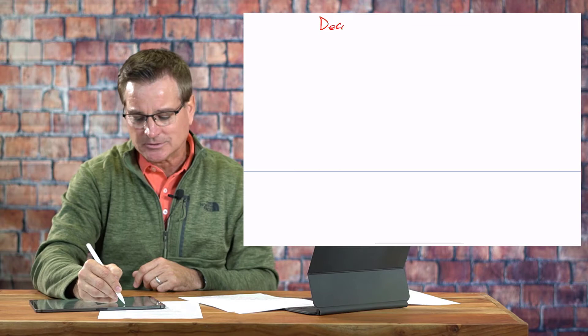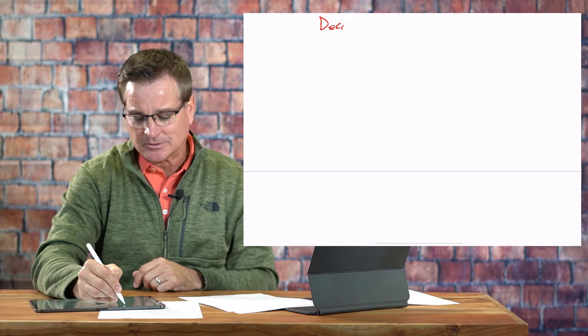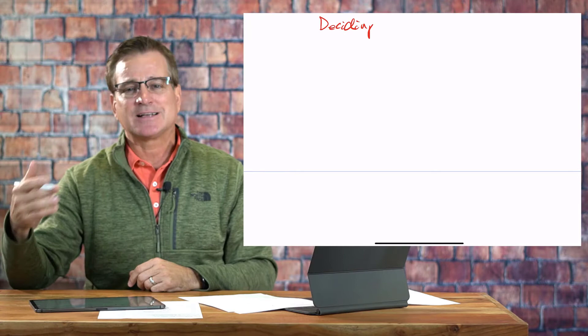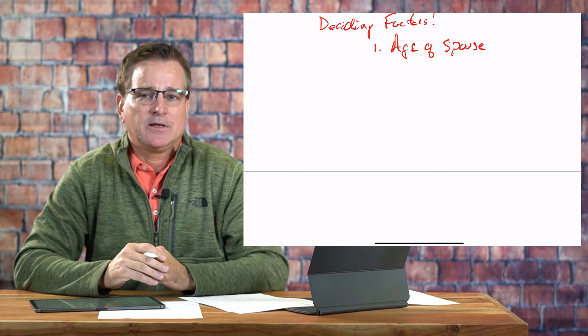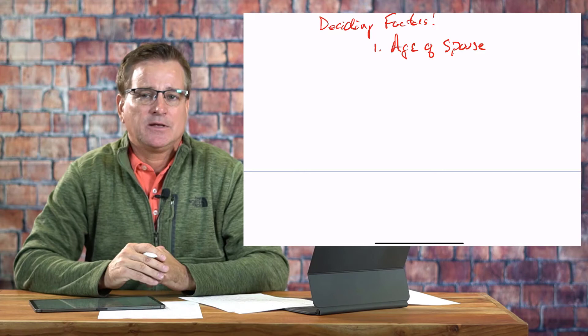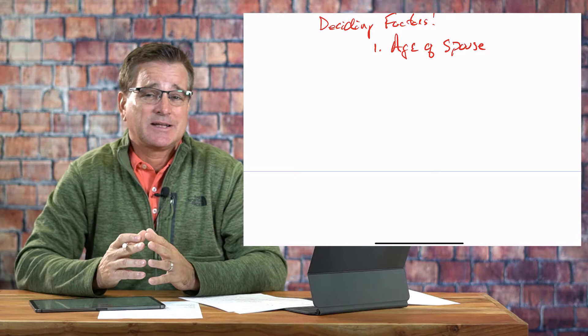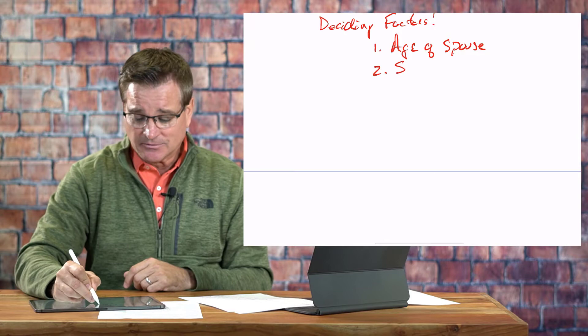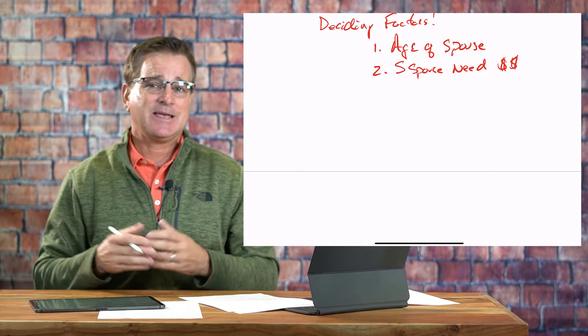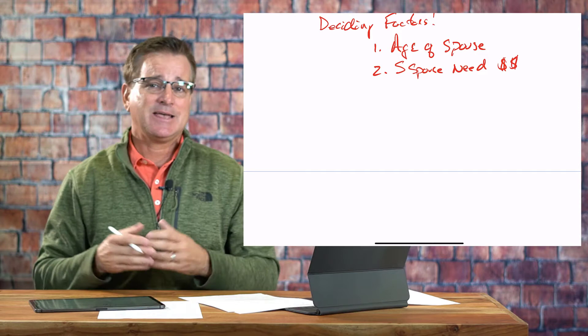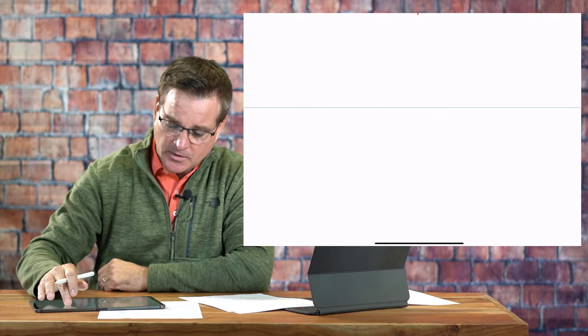What are some deciding factors on which option to choose — treat it as your own or treat it as an inherited IRA? I think the number one deciding factor is the age of both spouses: whether the deceased spouse was older and by how much, and critically whether the surviving spouse is over or under age 59 and a half. Number two is whether the surviving spouse needs the money — do they need the funds to live on for normal expenses, or can they postpone distributions from the traditional IRA?